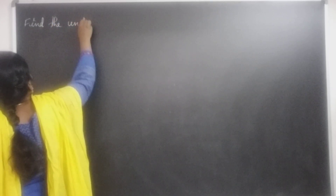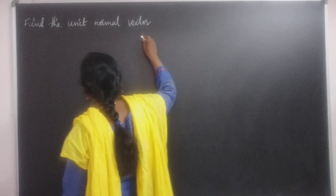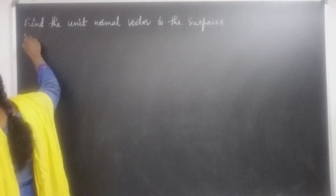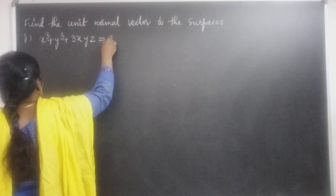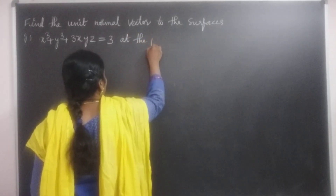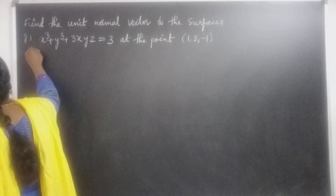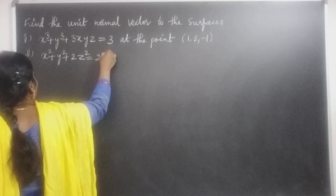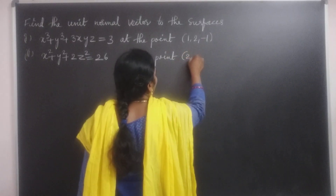I am taking one problem. Find the unit normal vector to the surfaces. First one: x³ + y³ + 3xyz = 3 at the point (1, 2, −1). The second one is x² + y² + 2z² = 26 at the point (2, 2, −3).